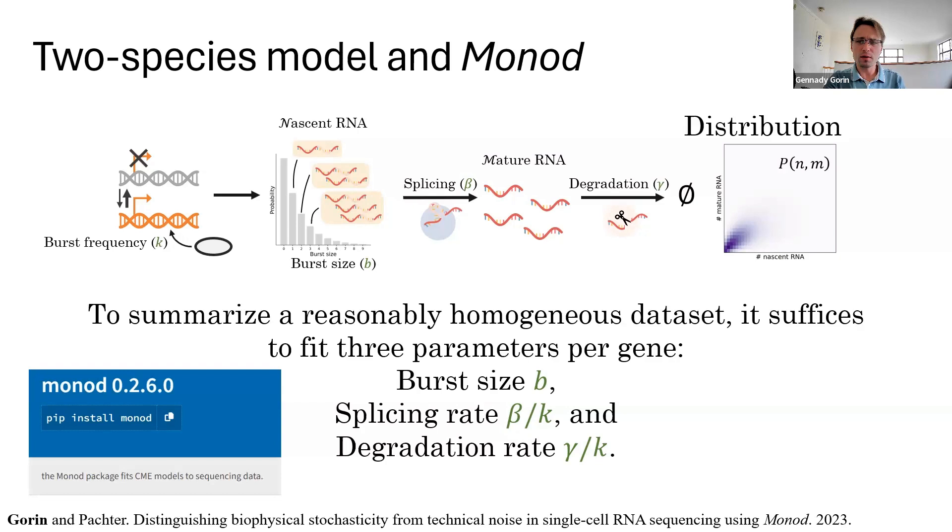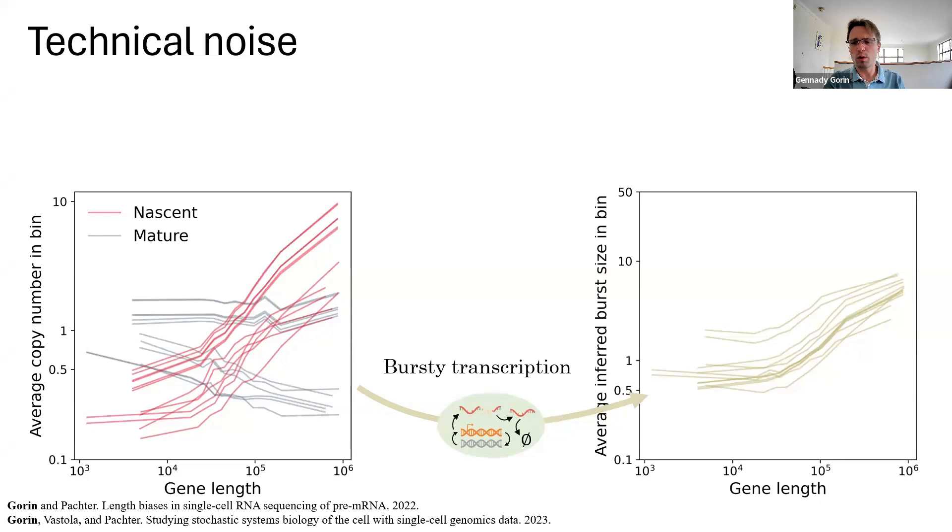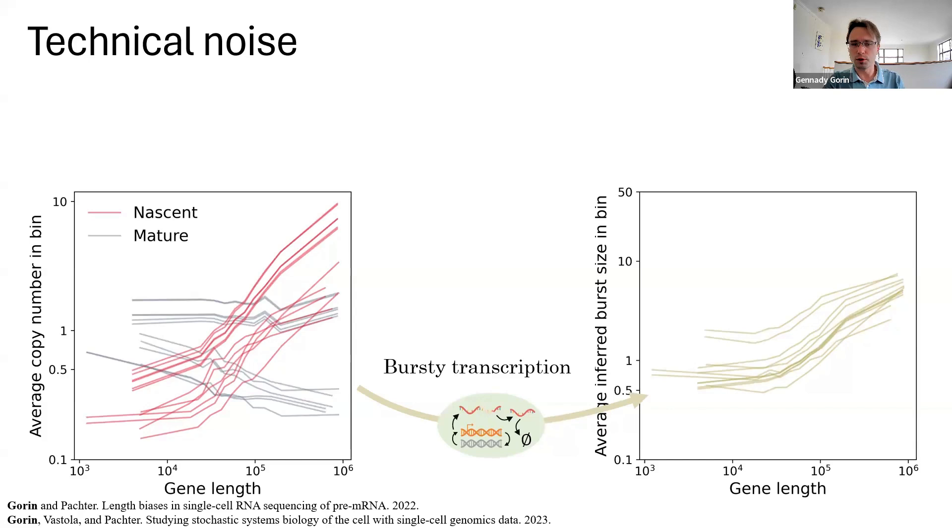And now that we have this foundation, we can revisit technical noise. And it turns out that just as in the case with Bayes theorem I discussed earlier, we really want to know something about the biology to say something about technical variability. These things are not mutually identifiable. So, every 10x data set I've ever seen shows a length bias in nascent RNA. Longer genes have more nascent RNA observations in a variety of tissues at a variety of levels of stratification. If we try to fit the model on a previous slide, we get seemingly reasonable results, but we predict that longer genes have higher burst sizes, which actually contradicts the known literature.